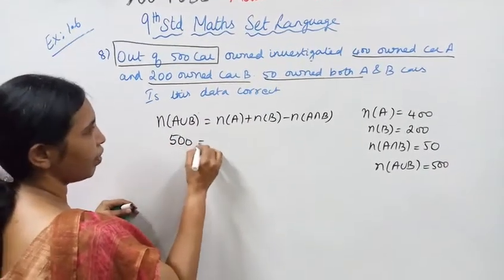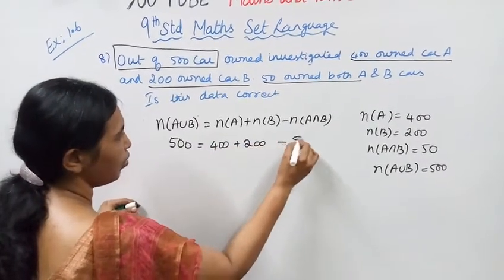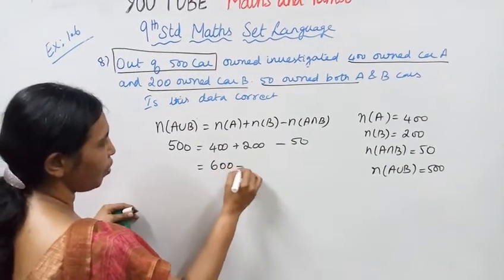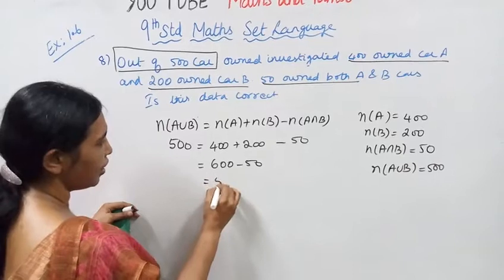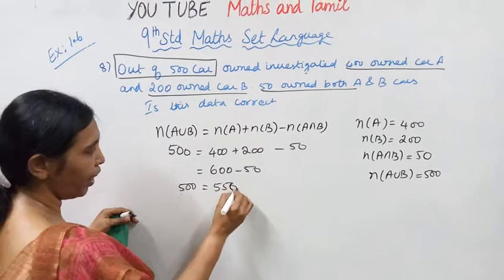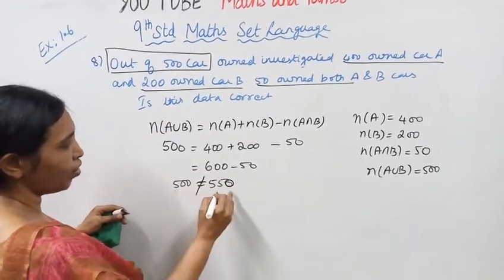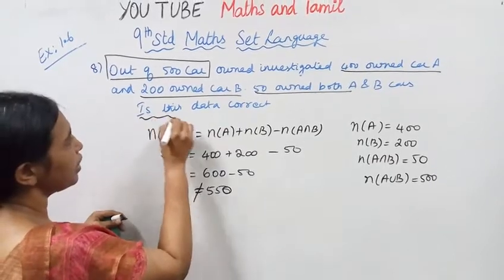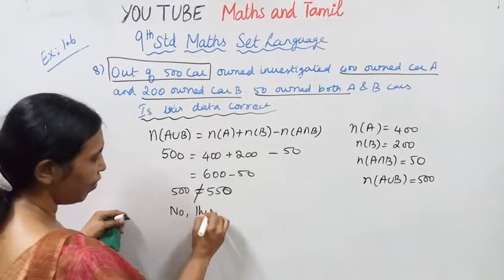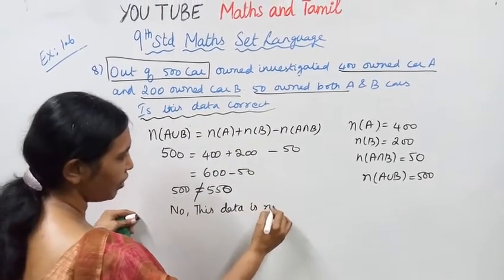N(A∪B) = 400 + 200 - 50 = 550. But the given total is 500. So this data is not correct.